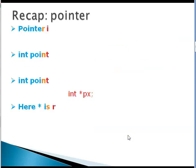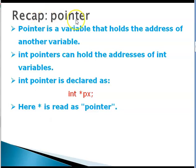Let us recap a little bit about what we mean by a pointer. A pointer is a variable that holds the address of another variable. Int pointers can hold addresses of int variables, int pointers can hold addresses of characters and so on. An int pointer is declared as int star px, that is integer pointer variable px. Here the star is read as pointer.